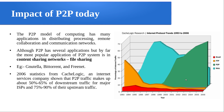In 2006, statistics from Cache Logic — an internet service company — showed that P2P traffic makes up about 50 to 65 percent of the downstream traffic for major internet service providers, and 75 to 90 percent of their upstream traffic. They took email, FTP, web, and P2P traffic, and found that 50 to 65 percent of total downstream traffic and 75 to 95 percent of total upstream traffic is contributed by P2P. That shows how important this topic is in the current scenario.